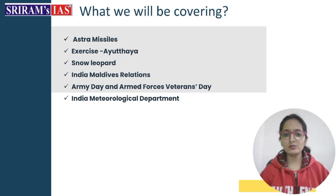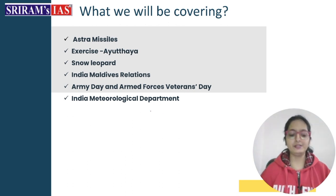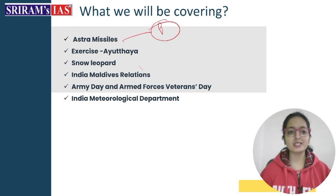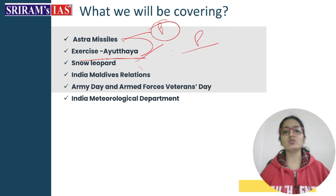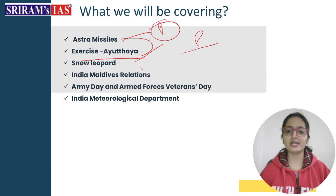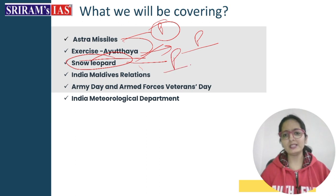Today we will discuss the following topics: first, Astra missiles, which links to the defense section and is important for prelims. Second, a bilateral defense exercise — also in the defense category and important for prelims. Third, snow leopards, which is also important.